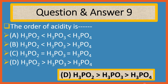The basicities of H3PO4, H3PO3, and H3PO2 are 3, 2, and 1 respectively. The hydrogen atom bonded directly to phosphorus is not acidic. The number of protonated oxygen atoms increases from 1 in H3PO2 to 3 in H3PO4. Thus, the overall inductive effect of the unprotonated oxygen acts most strongly in H3PO2, making it the strongest acid. Accordingly, the order of acidity is H3PO2 greater than H3PO3 greater than H3PO4.